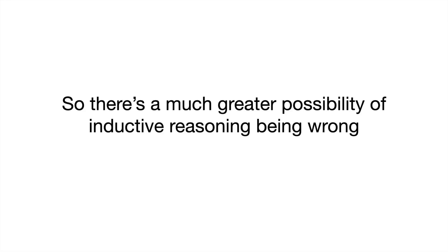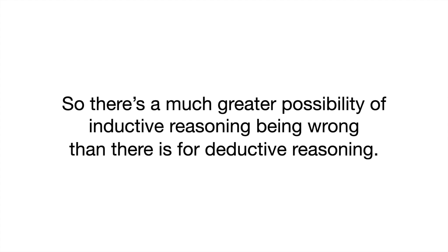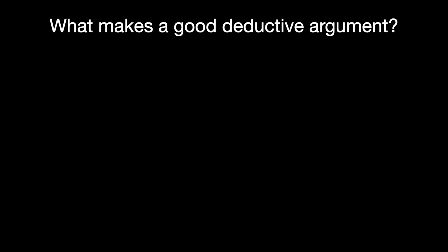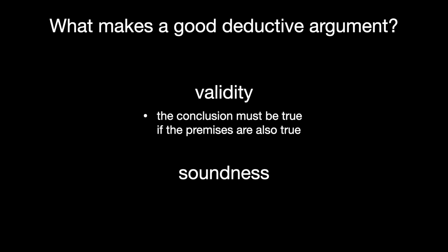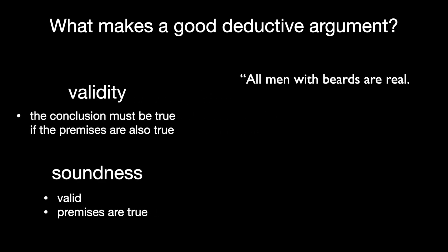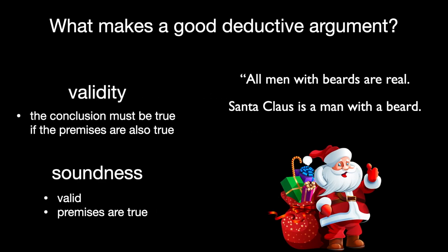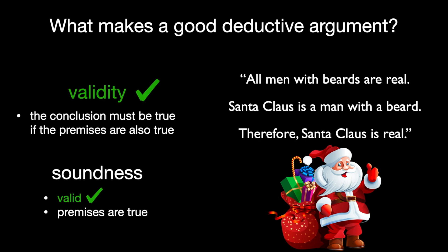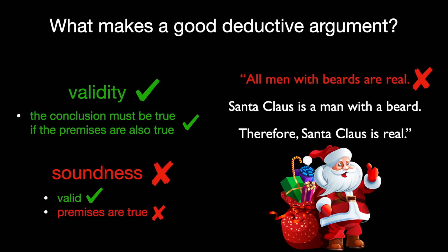So inductive reasoning is much more open to being wrong than deductive reasoning. There are two measurements of what makes a good deductive argument: validity and soundness. A deductive argument is valid if the truth of the premises necessarily makes the conclusion true too. And a deductive argument is sound if it's valid and if the premises really are true. For example: all men with beards are real; Santa Claus is a man with a beard; therefore, Santa Claus is real. That's a valid argument, but it's not a sound argument because there's a flaw in the first premise.